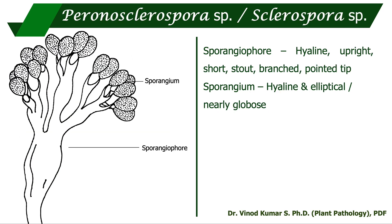Coming to the downy mildew pathogens: Peronosclerospora sorghi causes downy mildew of maize and sorghum, and Sclerospora graminicola causes downy mildew of pearl millet. Both share the same morphological characteristics in the asexual stage. The sporangiophore is hyaline, upright, short, stout, branched, with a pointed tip. The sporangium is hyaline, elliptical, and nearly globose.